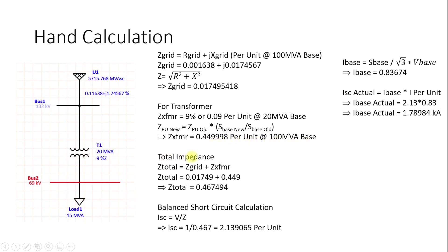The total impedance is Z_total = Z_grid + Z_transformer. Adding both values: Z_total = 0.467494 pu at 100 MVA base.